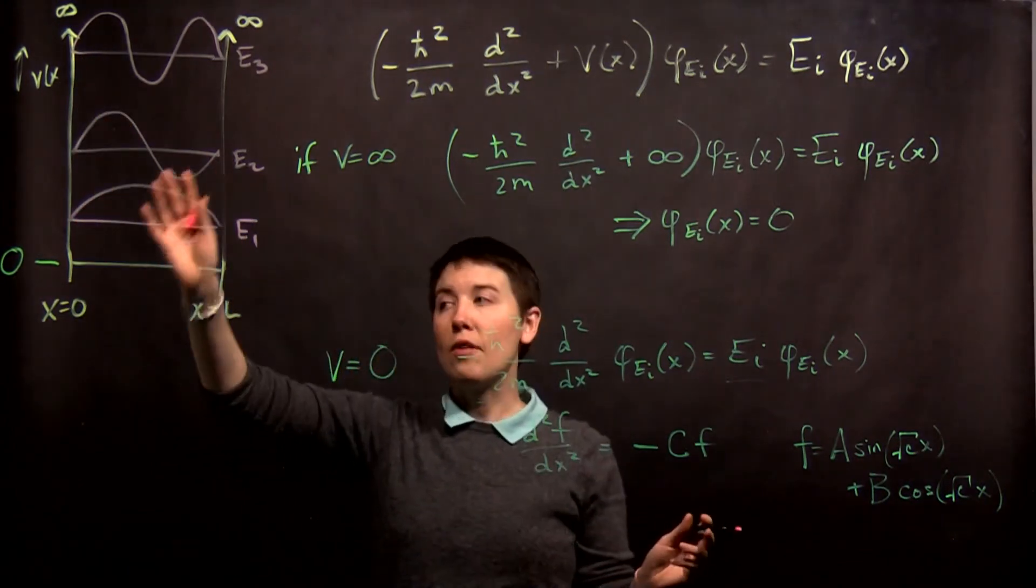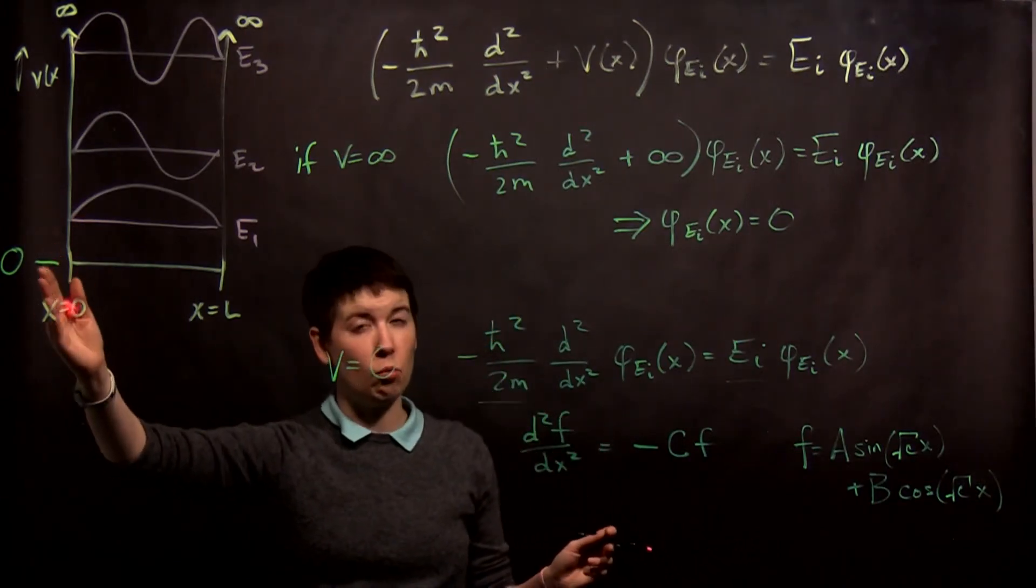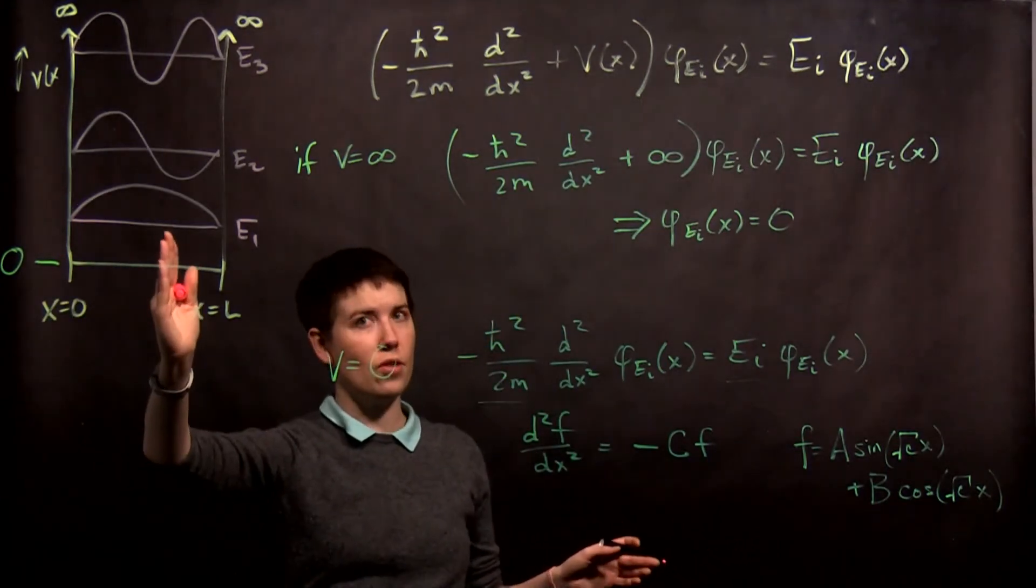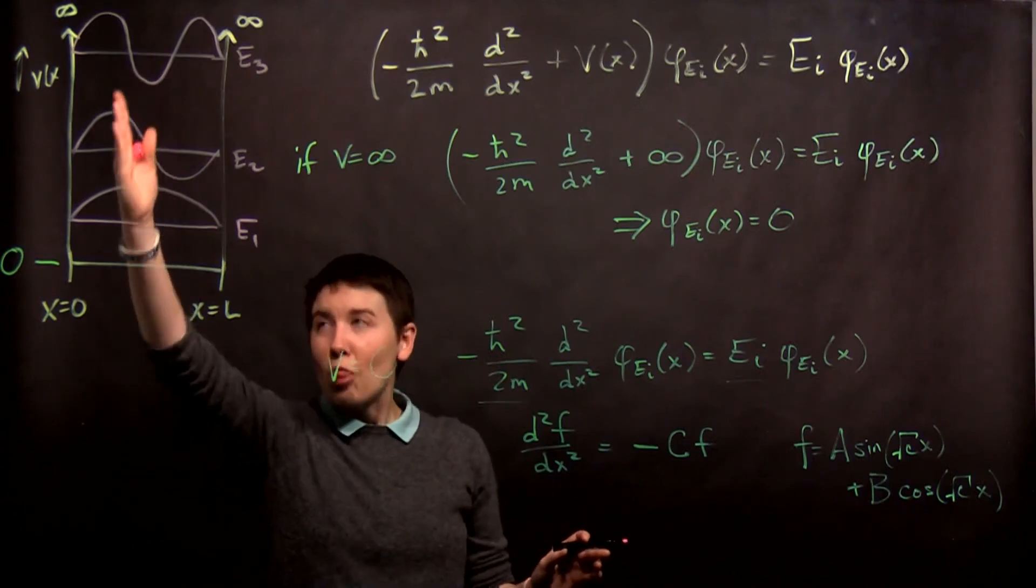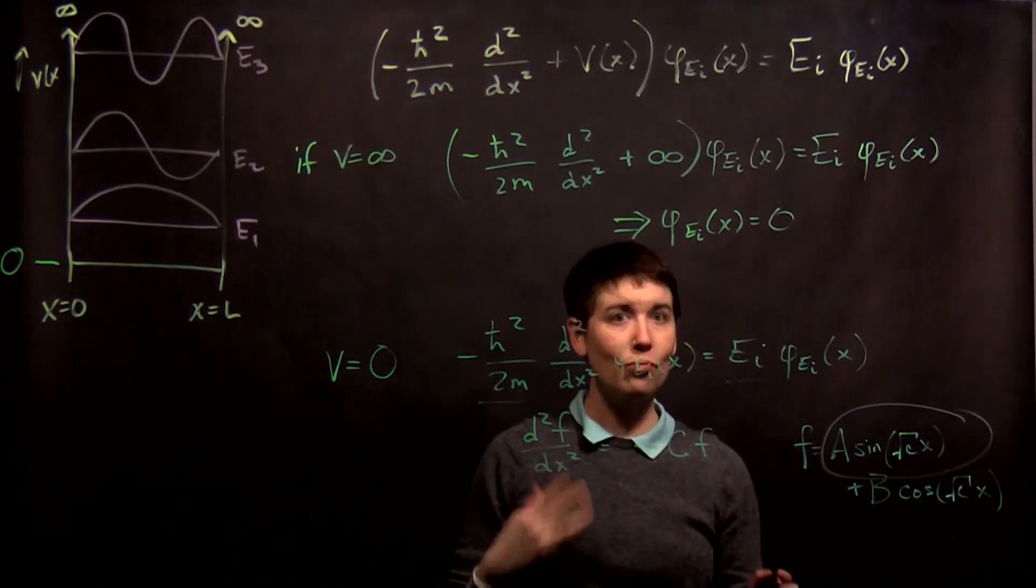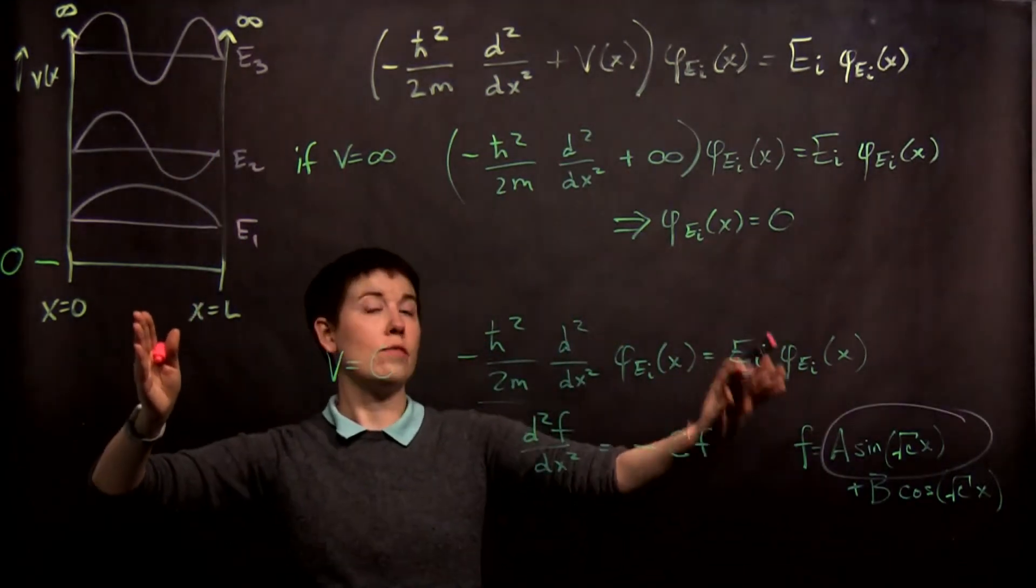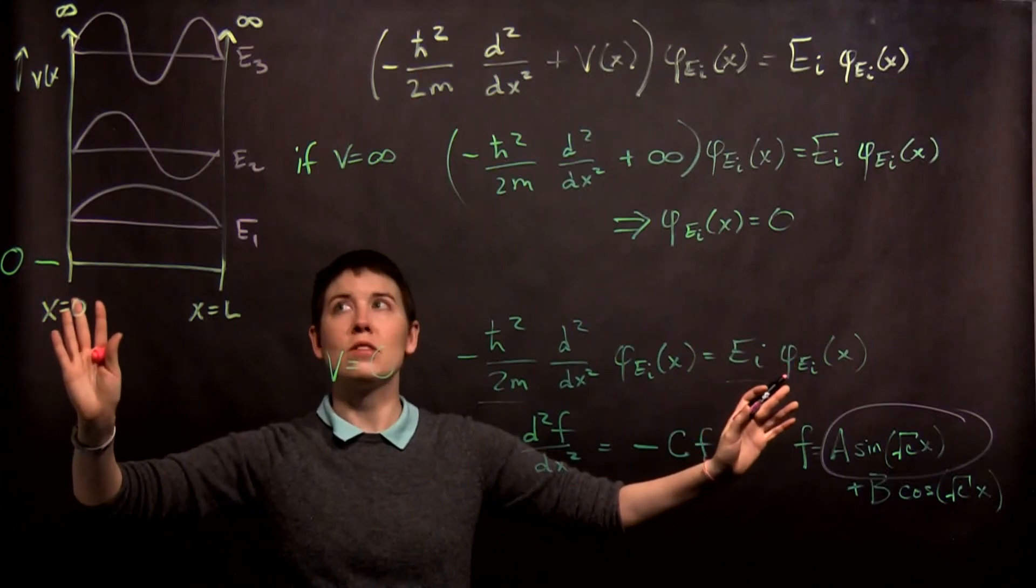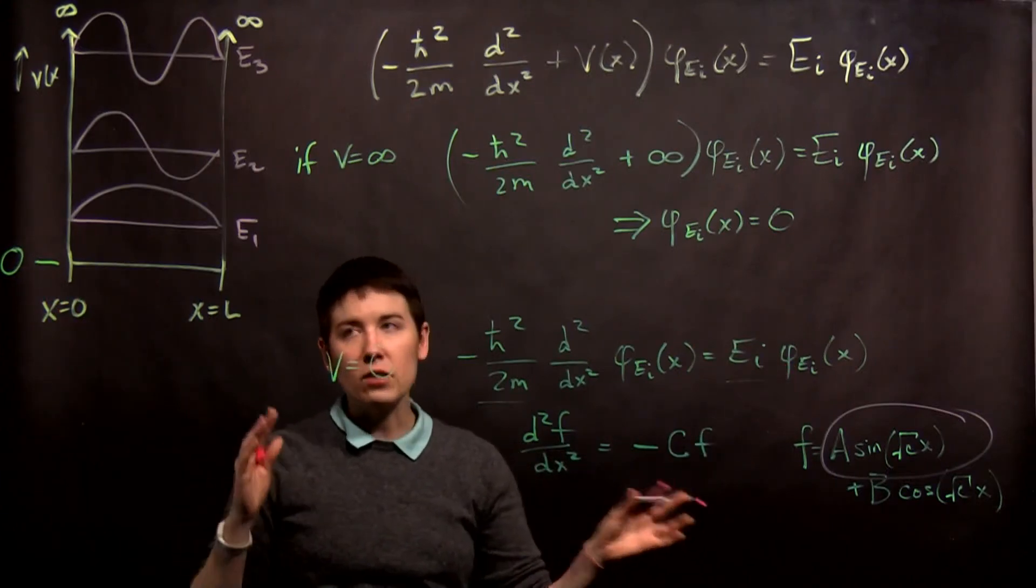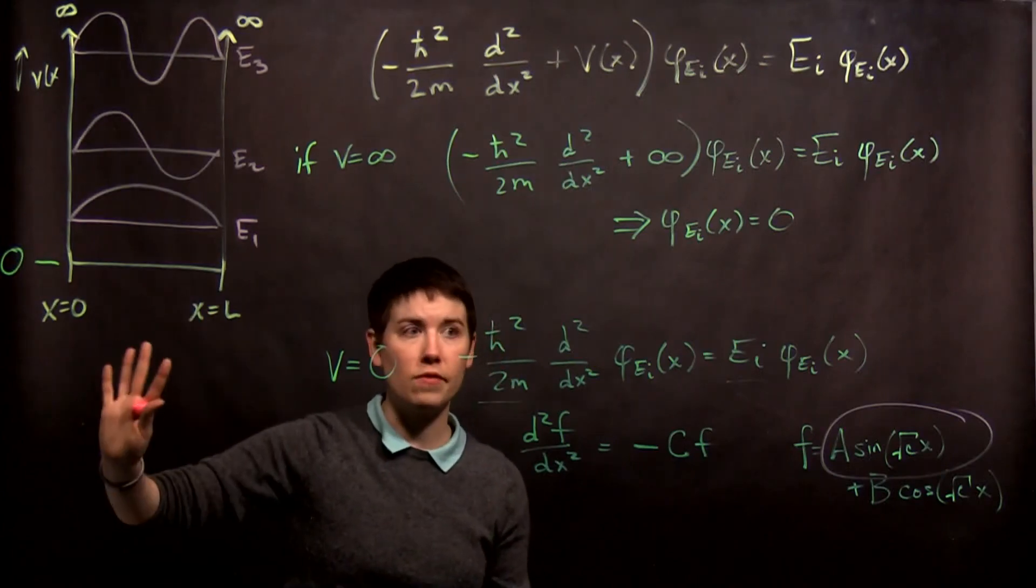So what that means is that for this choice of coordinate system, where I'm putting x equals zero at one wall, which is a really good idea, rather than putting it in the middle, for this coordinate system, we'll be using these terms. So if you redrew your coordinate system differently, you'd have sines and cosines, and it would be much less pleasant. So that's one way to think through what's going on. This picture is hopefully familiar to you from a previous class.